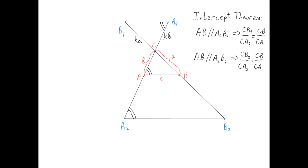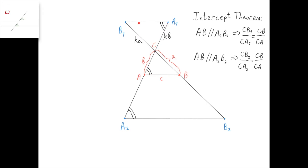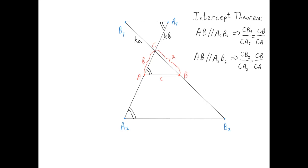The intercept theorem can work in both directions. If this over this equals this over this, then this line is parallel to this line. This also follows from homothety, because we can take a homothety centered at C with coefficient k, and therefore, since this is B and this is k times B, A goes to A1; and since this is A and this is k times A, B goes to B1. So AB goes under the homothety to A1B1, and because homothety preserves parallel lines, it follows that AB is parallel to A1B1. The intercept theorem also states that if AB is parallel to A1B1, then A1B1 is k times AB. This is apparent from the homothety we constructed, because the coefficient is k, and so if the original length was C, then the transformed length is k times C.